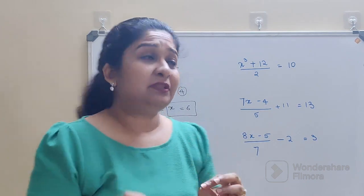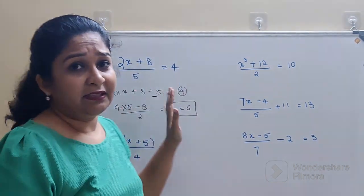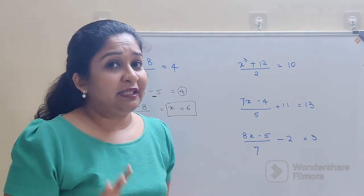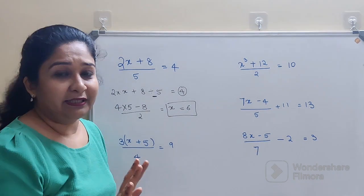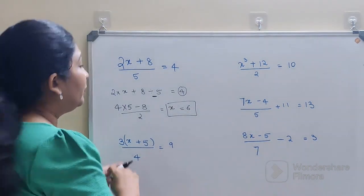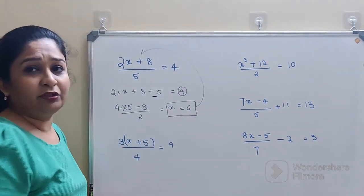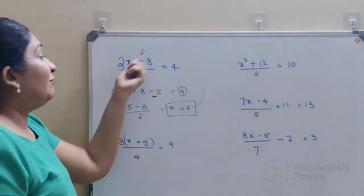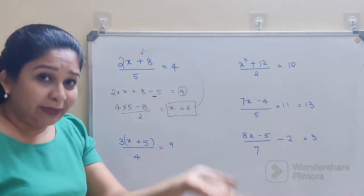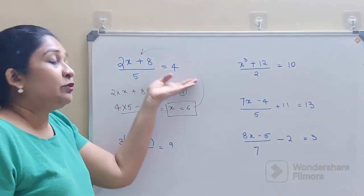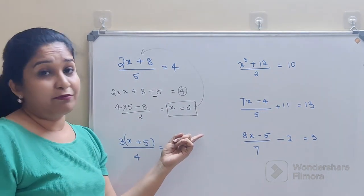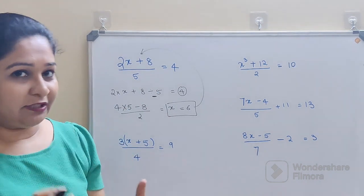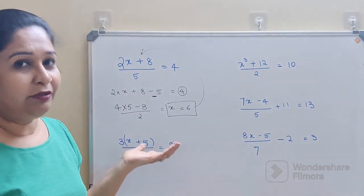Now please understand, students, when you come across something like this, and while solving, you have a little bit of time and you think that maybe this particular calculation was not correct, then what you should do is put this value in your original question and check. So 2 into 6 gets you 12, 12 plus 8 gets you 20, divide by 5 gets you 4. So this means our answer is absolutely correct. In case if it is not correct, it means you have done something wrong, so you can go back and check your working.